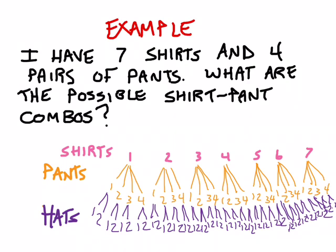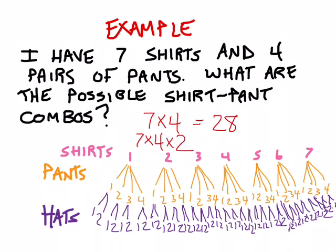If you're thinking efficiently, you might say you don't need to diagram the entire thing to know how many combinations are available. There are seven shirts and four pairs of pants, so that's just seven times four equals 28 possible outcomes. And if you wanted to include the hats, you could say seven times four times two equals 56 possible outcomes, and you'd be right.